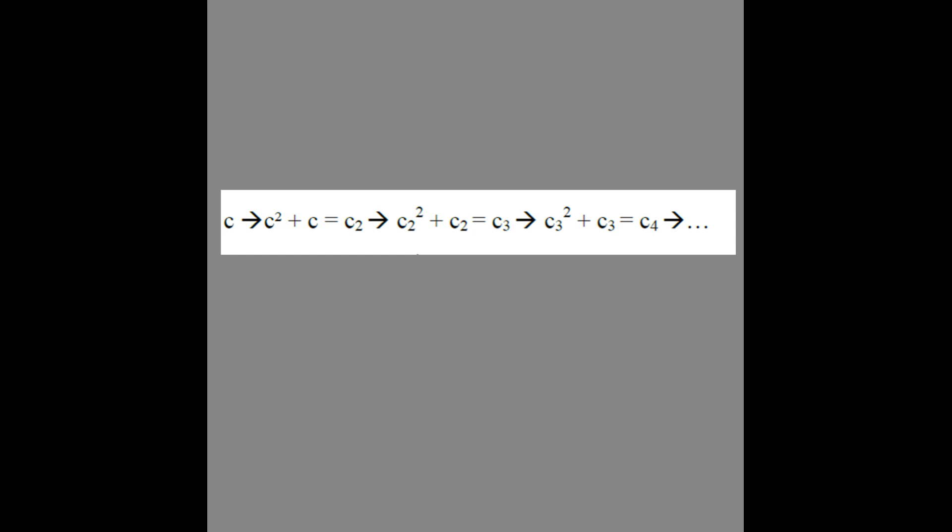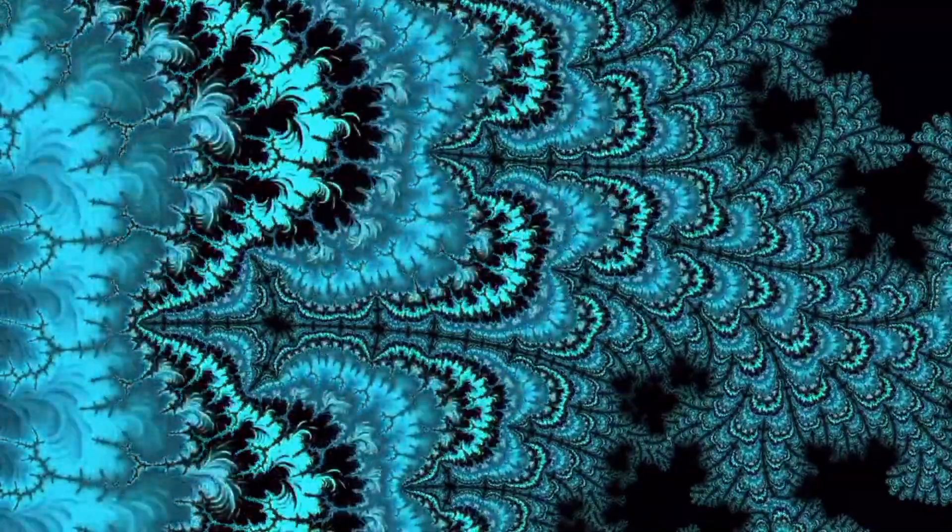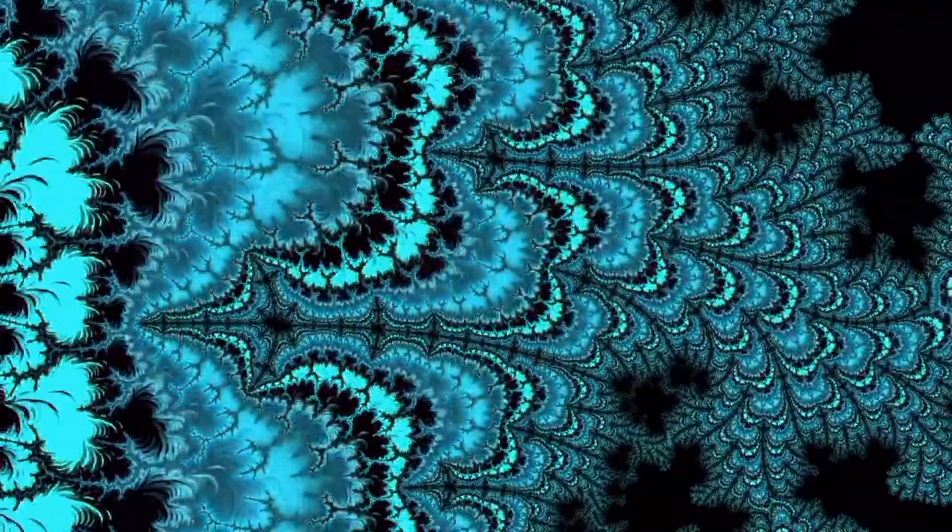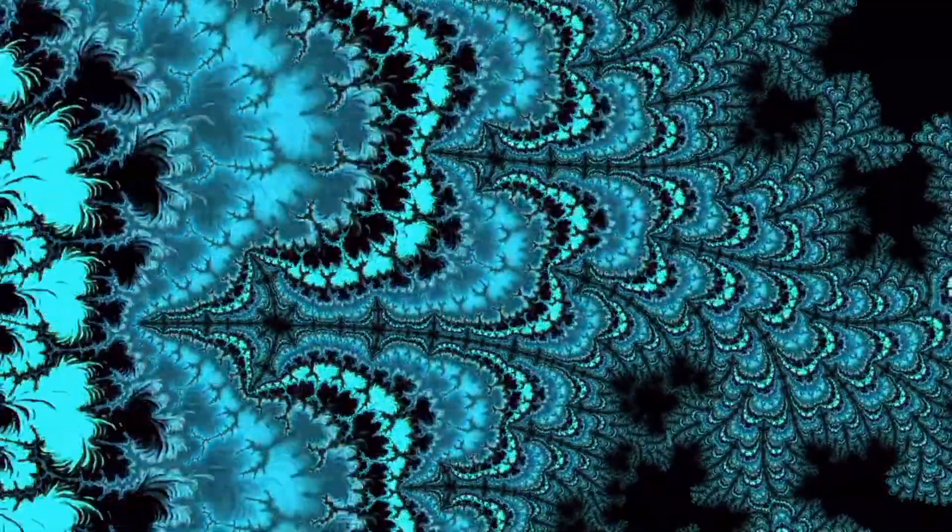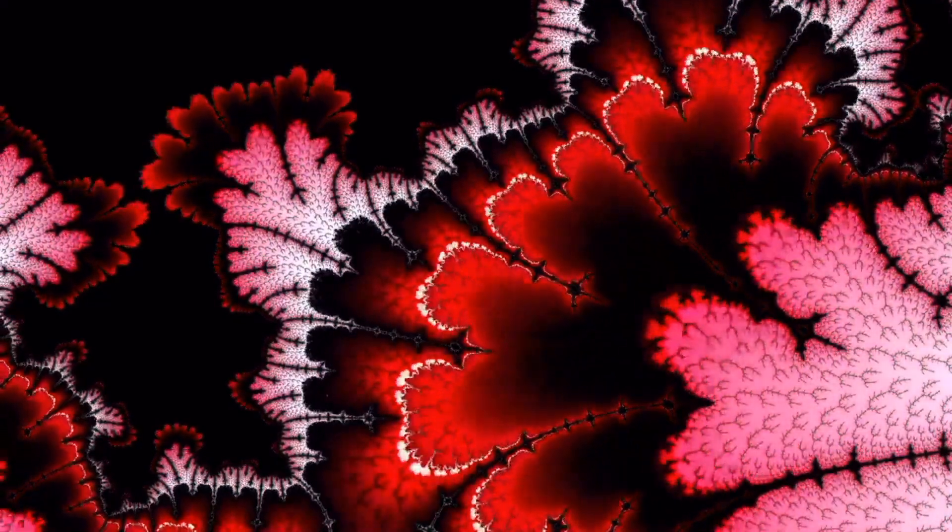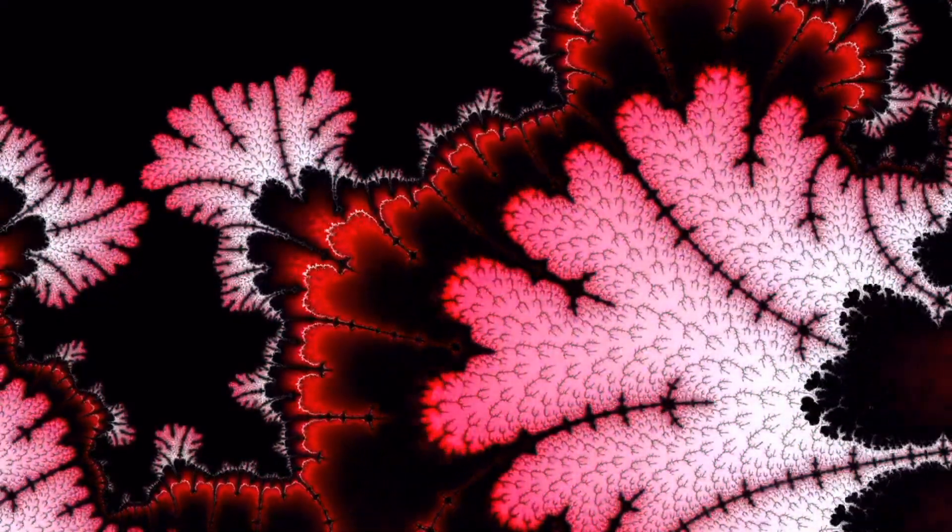The Mandelbrot set is defined in the complex plane, where recursive squaring and addition operations are performed. If the result exceeds a certain limit after a finite number of iterations, the point is considered unbounded and is colored. If it remains within this limit indefinitely, it is part of the Mandelbrot set and is colored black. The colored areas therefore represent the complement of the Mandelbrot set. The infinite complexity of the boundary of the Mandelbrot set, where the points continually reveal new layers of detail upon magnification, demonstrates its incomputability. No algorithm can precisely determine the fate of every point after infinite iteration, making the Mandelbrot set itself incomputable.